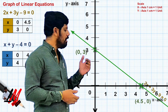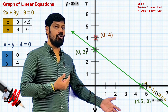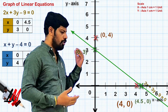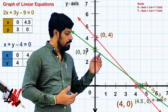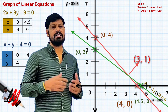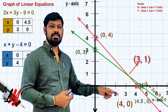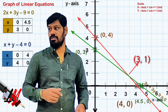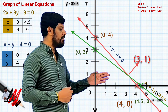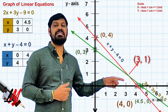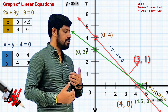For the second equation, mark (0, 4) on the y-axis and (4, 0) on the x-axis. Join these points and write the equation x + y − 4 = 0. You can observe that both lines intersect at one point — as expected for a unique solution. The intersection point is (3, 1), which is the solution of the given system of equations.